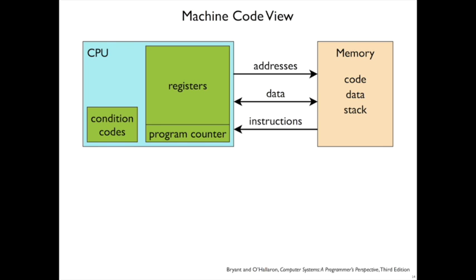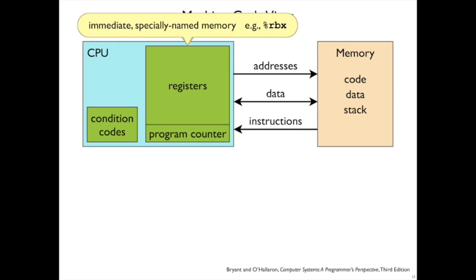Here's a view of how programmers think about the machine. There's a CPU and there's memory. In the CPU we have something like memory, a little shadow memory that's much smaller, that's more immediately available.